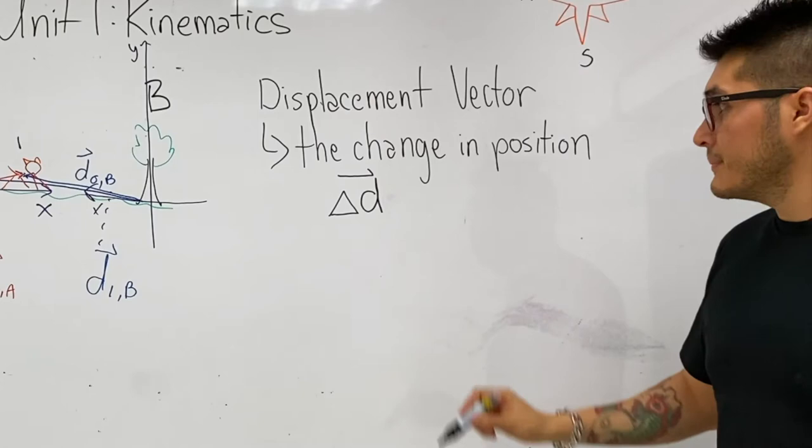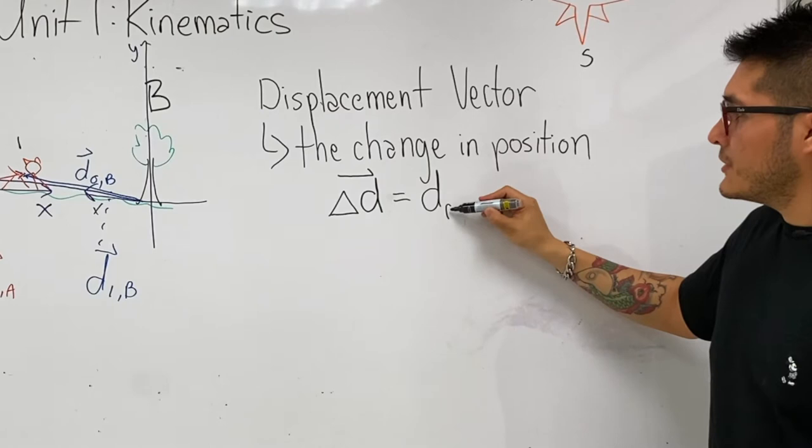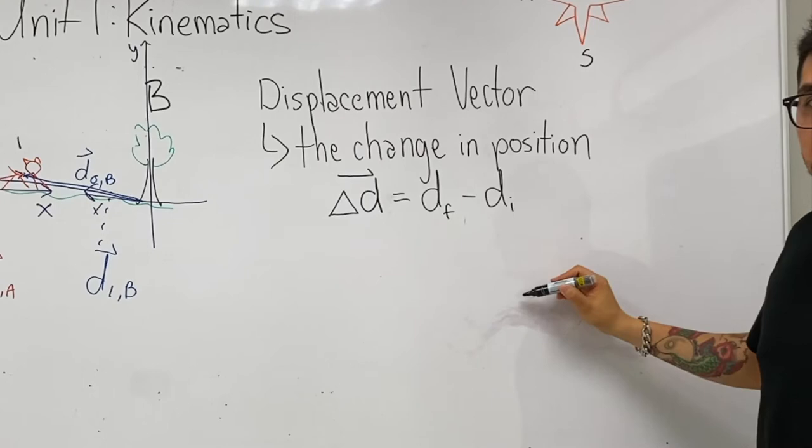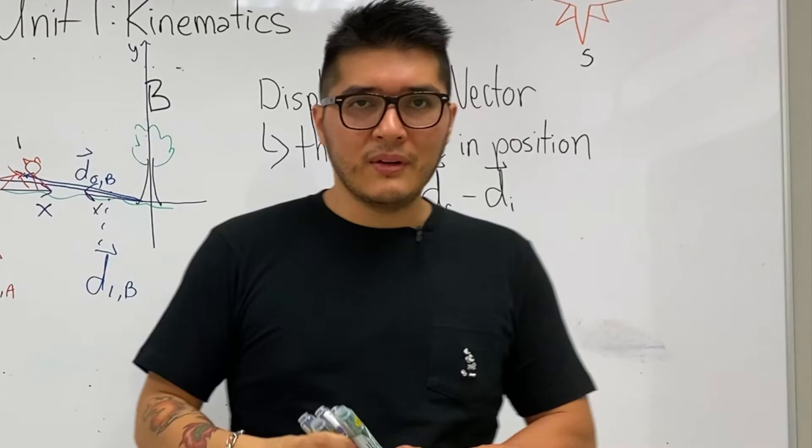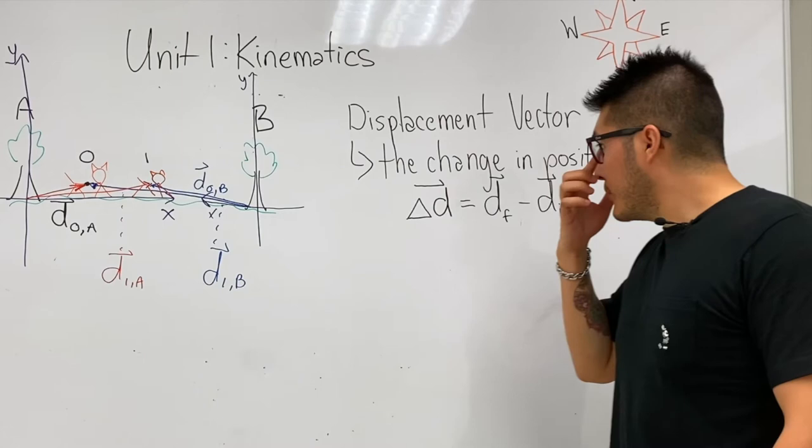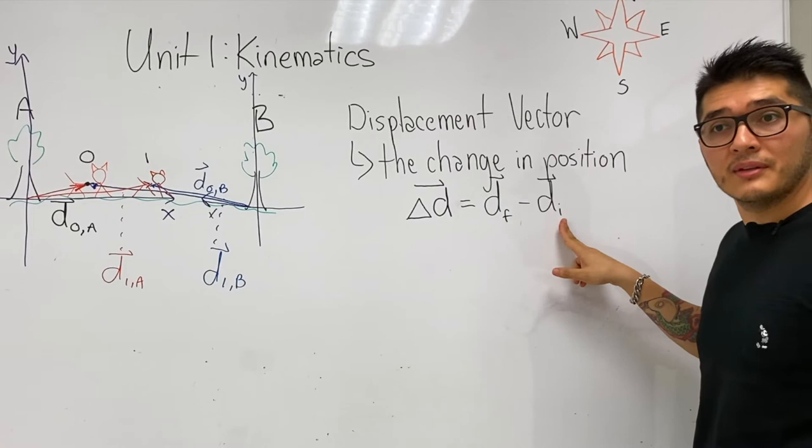Since this quantity turns out is also a vector quantity, we need to include the arrow there. In general, it could be the final position that you're interested in (f for final) minus the initial position that you're interested in. So we have a new equation - our first one in the course so far. Displacement is the change in position, Δd̂ = d̂f - d̂i for whatever final time and initial time you're considering.